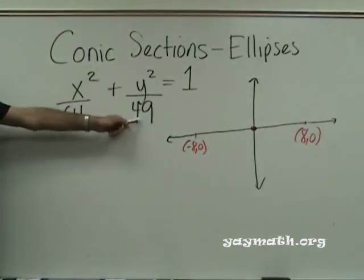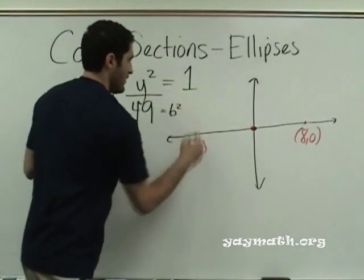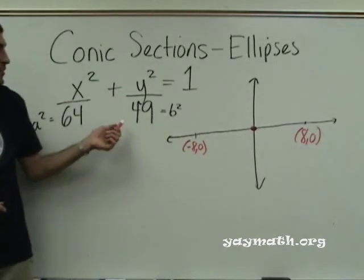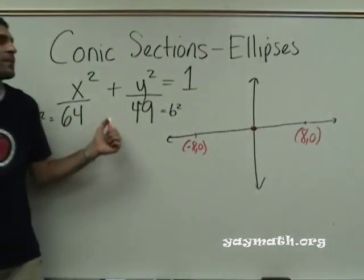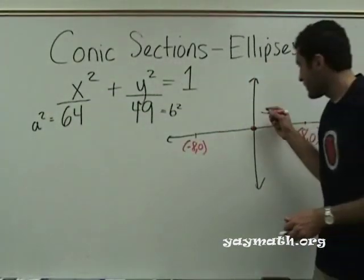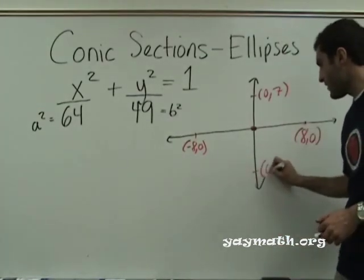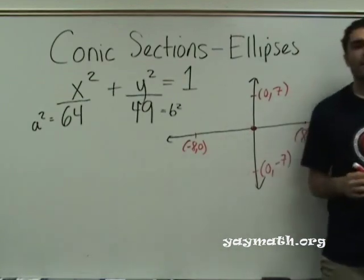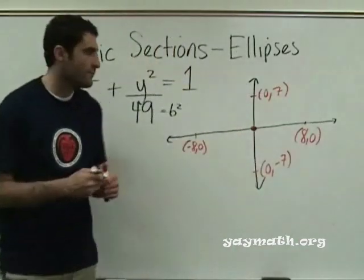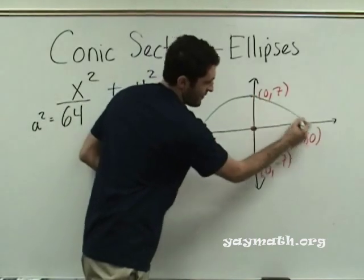And this value underneath y squared is called b squared. Or b squared. So b squared is forty-nine. So b is seven. So b is seven. And where do you think we go with seven? Up and down. Up and down. So zero is seven. Makes an oval. And zero negative seven. And this is our ellipse. Notice it's not a circle. It's an oval. No. It's an oval.